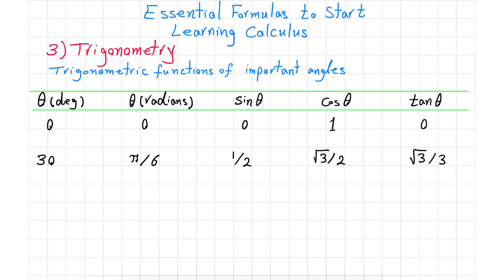Another important angle is 45 degrees, which is equivalent to π/4 in radians. Sine of 45 degrees is √2/2, and cosine of 45 degrees is similar to sine of 45 degrees — also √2/2.